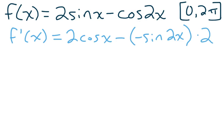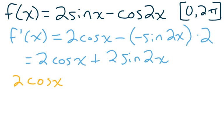I'm going to clean that up just a little bit and say that equals 2 cosine x plus 2 sine 2x. Alright, now once I have the derivative, I want to take it and set it equal to 0.